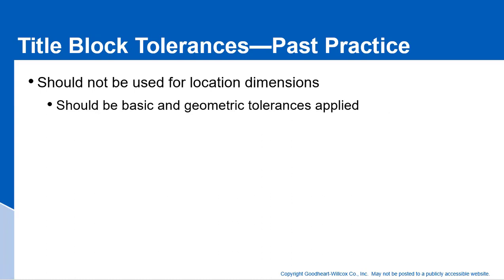Regarding block tolerances, the author says block tolerances should not be used for location dimensions. I think it's going to take a while for industry to catch up, because I think everybody still relies on block tolerances. Where I work, the block tolerance is typically plus or minus five thousandths, which is adequate for a lot of cases, but in some cases you need a tighter tolerance, and in others you should be able to allow more. The general theme of this course is that all tolerances need to be calculated — don't rely on block tolerances just as defaults, because that's bad practice.